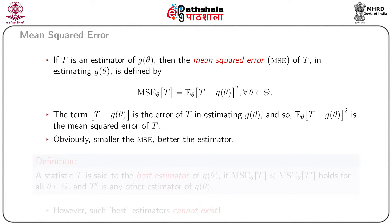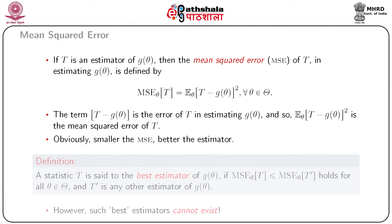Naturally, we would prefer an estimator with smaller or smallest MSE. If such an estimator exists, it will be the best for the parameter g(θ). An estimator T is said to be best for g(θ) if it has the smallest MSE among all estimators of g(θ), that is, MSE_θ(T) ≤ MSE_θ(T') for all θ ∈ Θ and for any other estimator T' of g(θ).